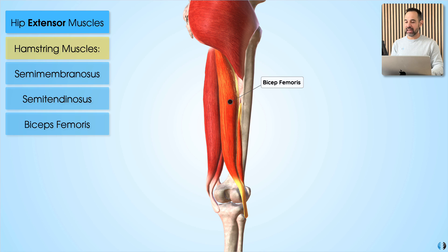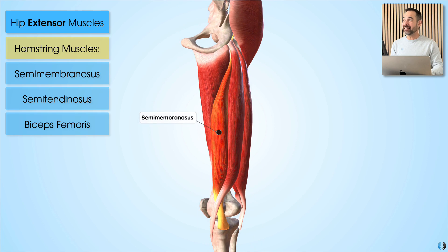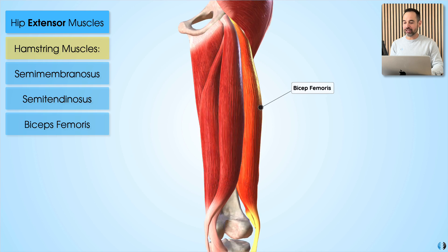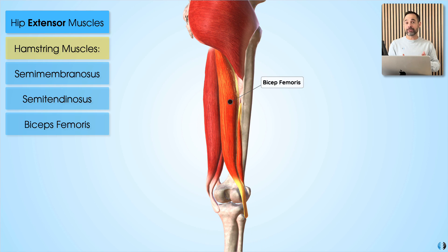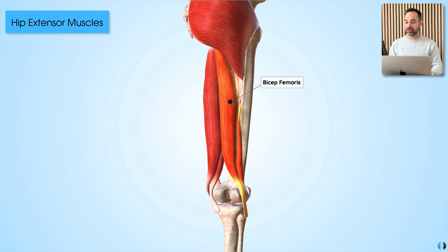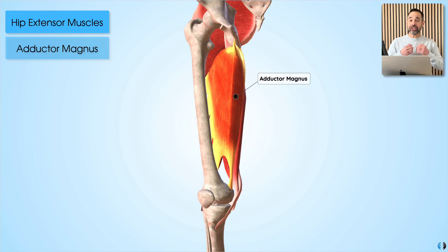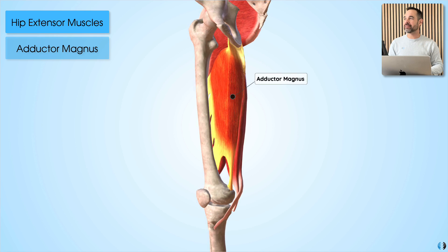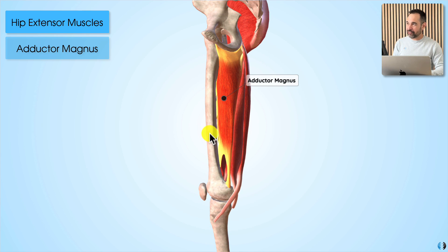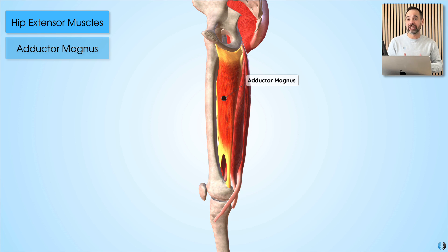Looking at semimembranosis, the hamstrings all originate around the ischial tuberosity of the pelvis before inserting around the proximal tibia and the proximal fibula in the case of biceps femoris. This helps us remember that as well as being hip extensors, these muscles also flex the knee. The other muscle which is a primary hip extensor — and often forgotten — is adductor magnus. Looking at this muscle from the side with the femur in a neutral position, we can see it runs along the back of the femur before inserting into the distal femur posteriorly, confirming it is also a chief hip extensor.